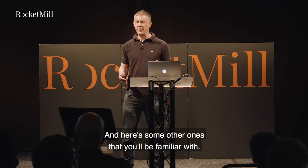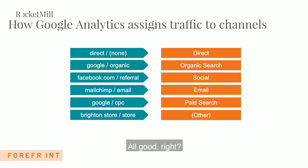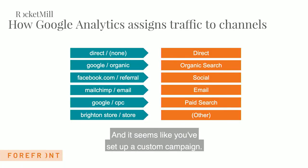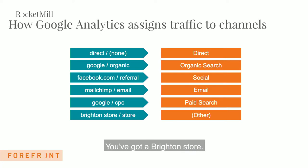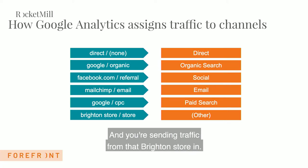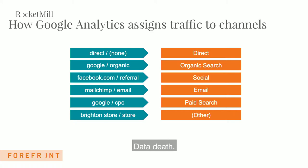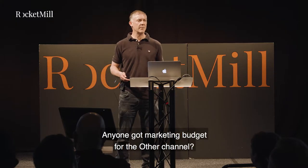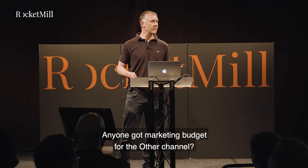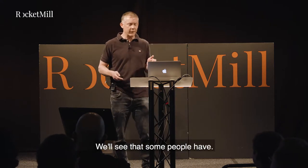Here are some other channels you'll be familiar with — all good, right? Until you get down to the bottom, and it seems like you've set up a custom campaign from a Brighton store and you're sending traffic in from that. What does Google Analytics do about that? I'm really sorry to disappoint you, but it chucks it into the 'other' channel — the data death bucket. Anyone got marketing budget for the 'other' channel? Hands up.